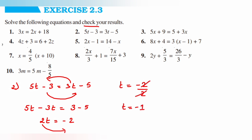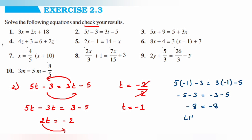Now we'll check whether the answer is correct by substituting t is equal to minus 1: 5 into minus 1 minus 3 is equal to 3 into minus 1 minus 5, giving minus 5 minus 3 is equal to minus 3 minus 5, so minus 8 is equal to minus 8. LHS and RHS are equal, meaning t is equal to minus 1 is the correct answer. Now we'll move on to the third question.